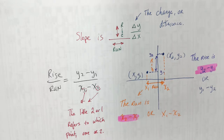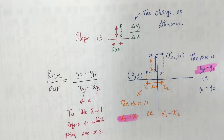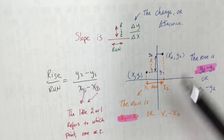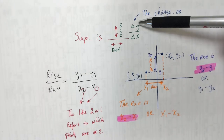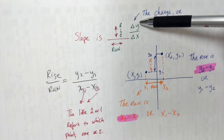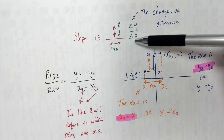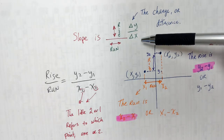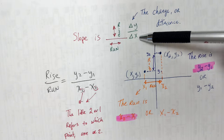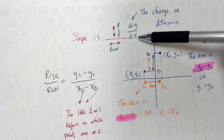So slope — here's the big idea. Slope is rise over run. Rise is how far up or down it goes, which is y. Run is how far across — left or right it goes. That's the x.